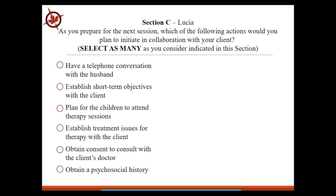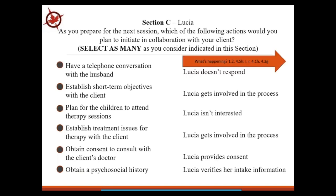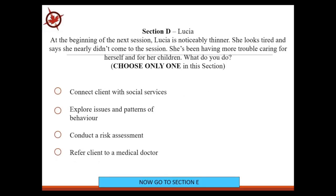Section C is another example showing how the simulation is moving you through therapy sessions. As you prepare for the next session, which of the following actions would be helpful in planning for collaborating with your client? Again, you can select as many as you consider indicated. Section D is a little different — here you can only choose one item, and again you can't go back. You can't change your mind. As soon as you click an option, that's the option you've got.